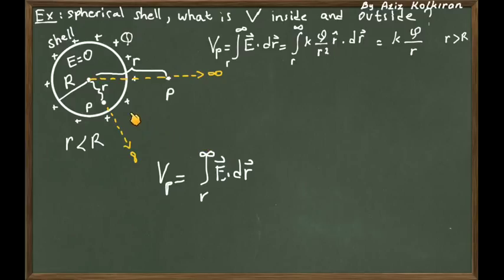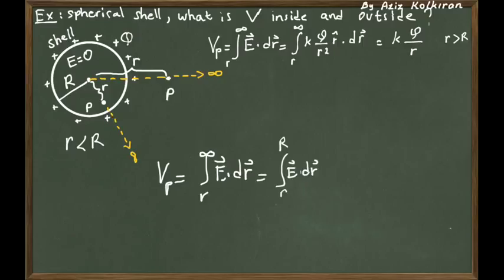We have to break this integral into two terms because when you go on this line starting from point P inside to a far distance, you cross the border of the shell at r equal to capital R. So we break the integral into two parts: first from r to capital R, which is the radius of the shell, plus from capital R to infinity.